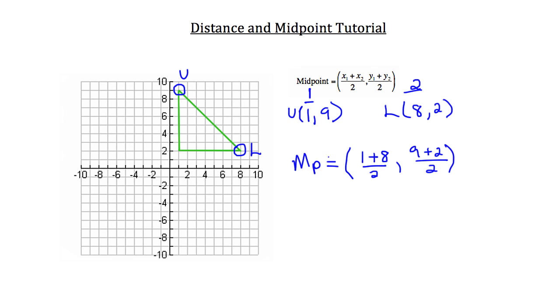Now we just want to simplify what we have here. So the midpoint is equal to 1 plus 8, which is 9, over 2, comma 9 plus 2, which is 11, over 2. You can leave them in fractions just like they are, or you could rewrite them if you wanted to in decimal form. So 9 over 2 is 4.5, and 11 over 2 is 5.5. Use whichever one you're more comfortable with. And that's how you calculate the midpoint of a segment.